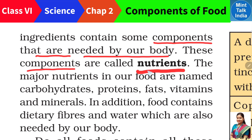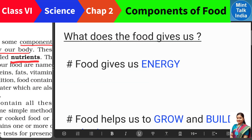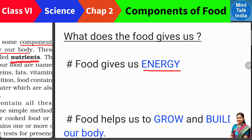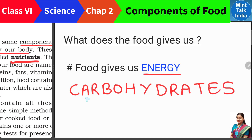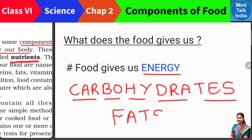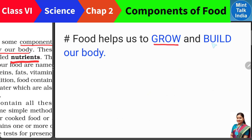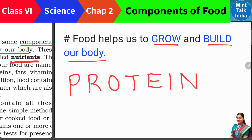So what are the names of those nutrients present in our food? Food humein sabse pehle energy deta hai, so the nutrient which gives us energy is called carbohydrates — C-A-R-B-O-H-Y-D-R-A-T-E-S. Iske alawa, fats naam ka bhi ek nutrient hai jo humein body mein energy deta hai. Then the second point — food helps us to grow and build our body — and the nutrient which helps us to build our body is called proteins — P-R-O-T-E-I-N-S.